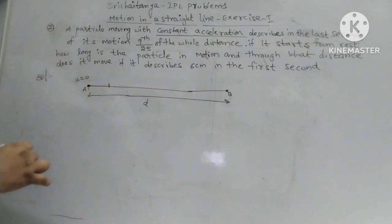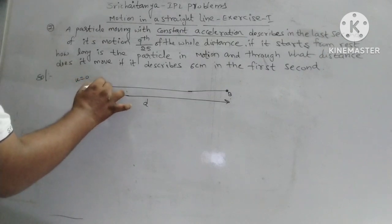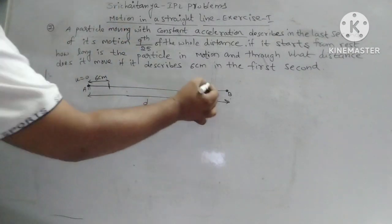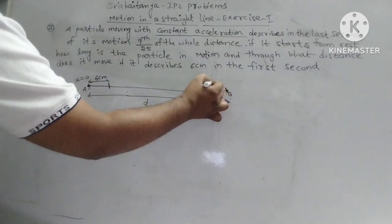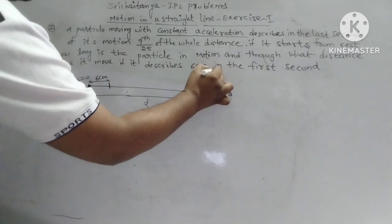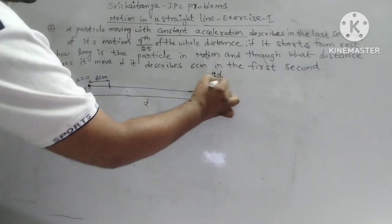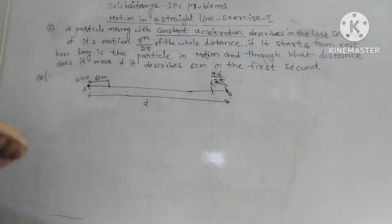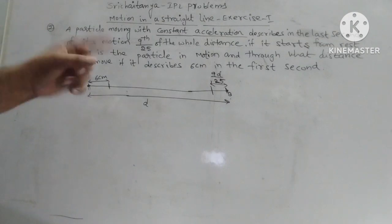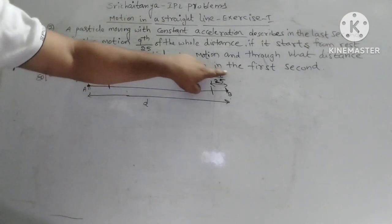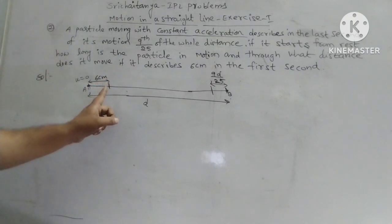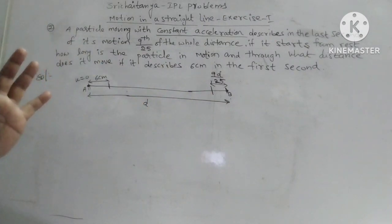U is equal to 0 — starting from rest. In the last second, the distance covered is 9/25 of D. The first second distance is 9/25 — this is very clear. The first second distance is 6 cm. What is the total distance? This is the question.